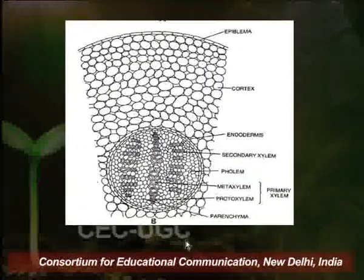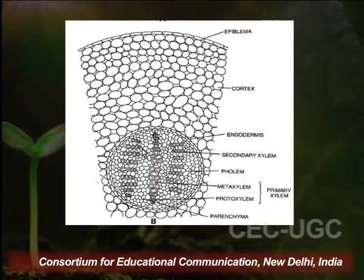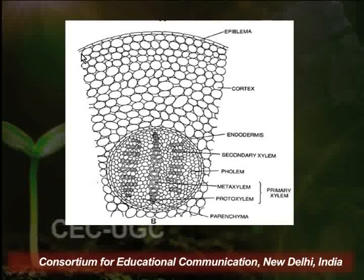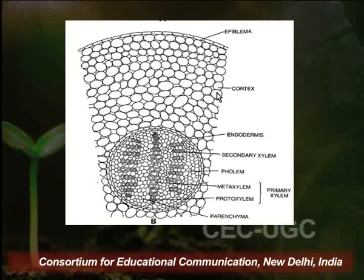Now let us talk about root and its anatomy. As we have already discussed, roots are of two types in case of Cycas — one is called the normal root and the other is called the coralloid root. The anatomy of a young normal root of Cycas resembles that of a dicotyledonous root in its internal structure. If we go through the transverse section of a normal root in Cycas, we will see that the outermost layer is termed as epiblema, which is followed by cortical tissues.